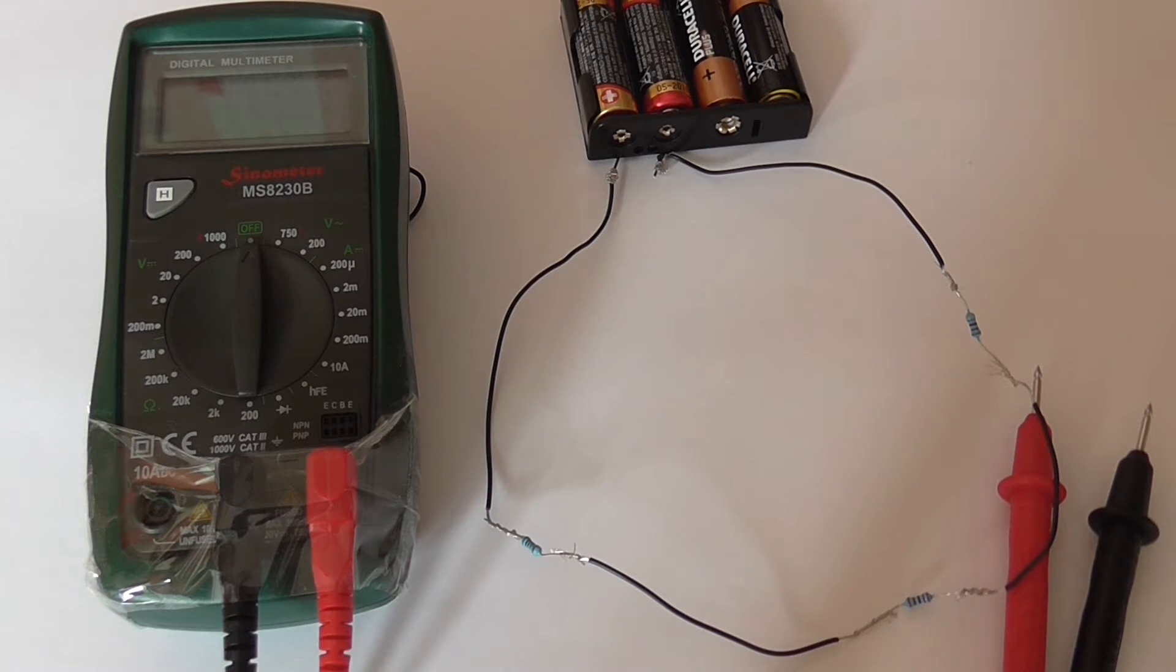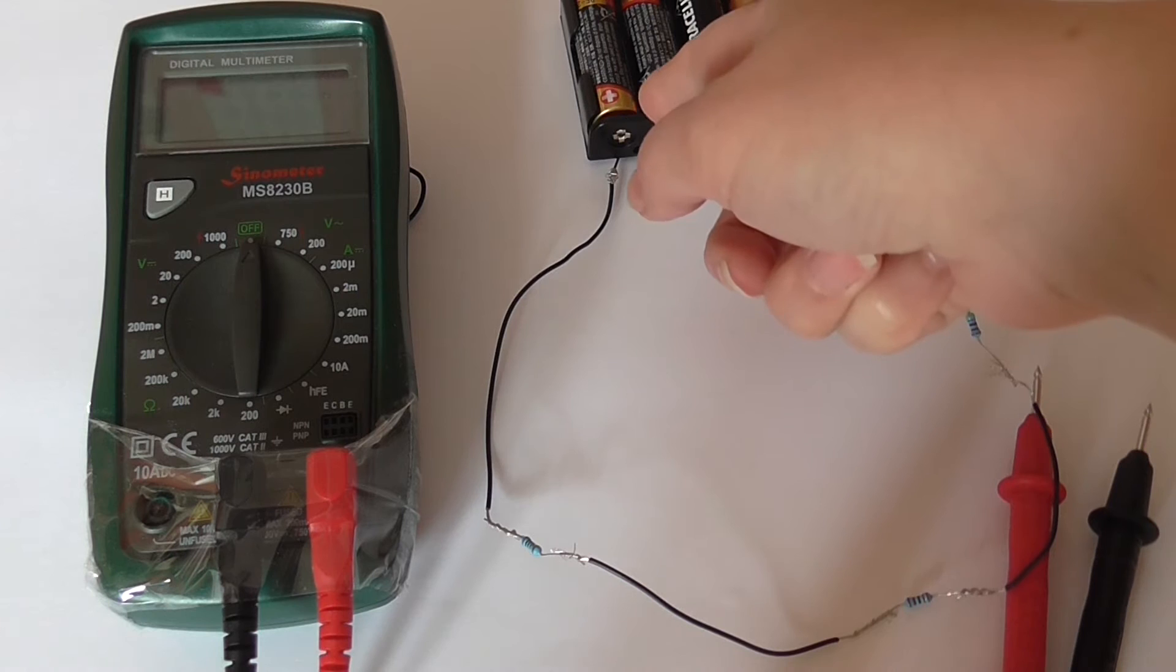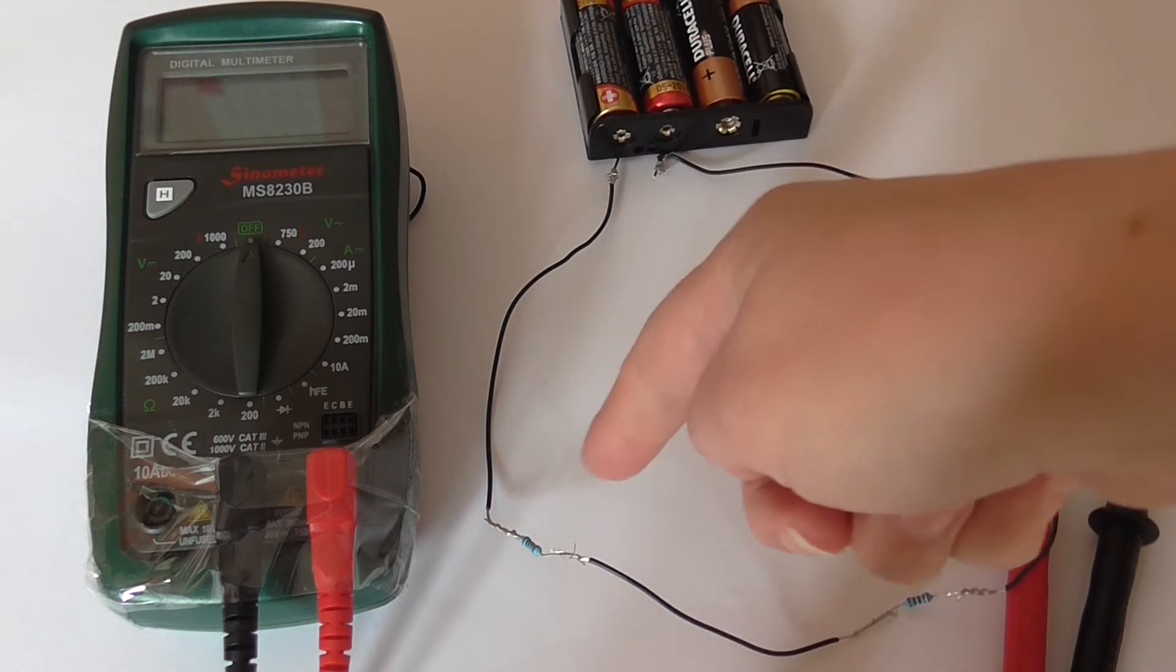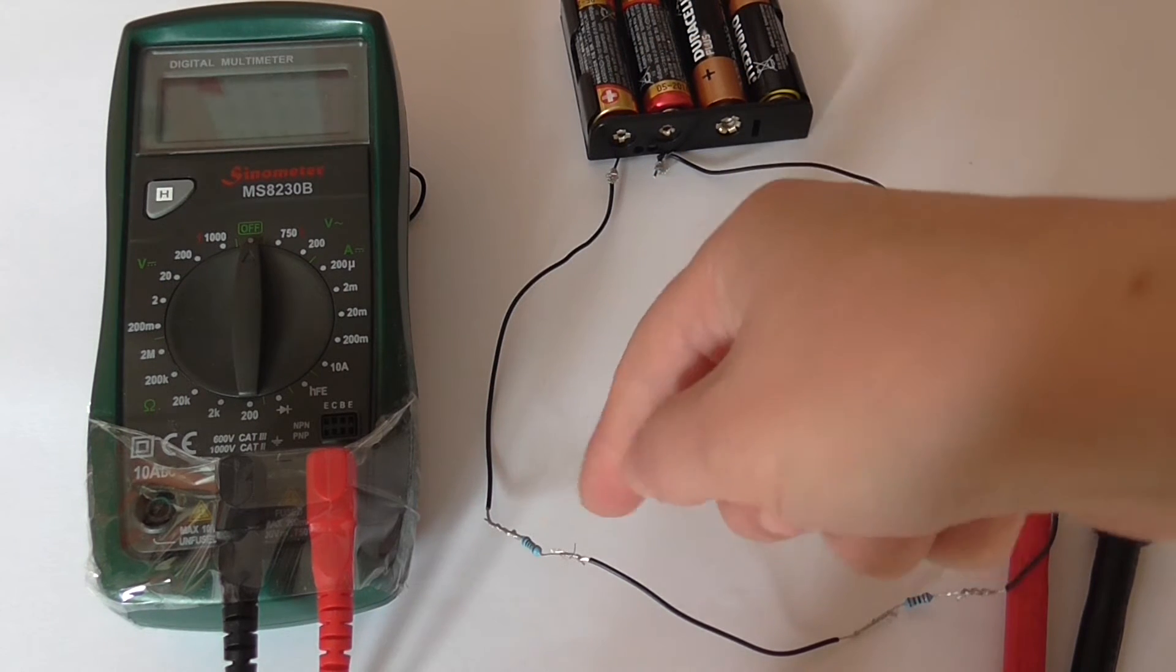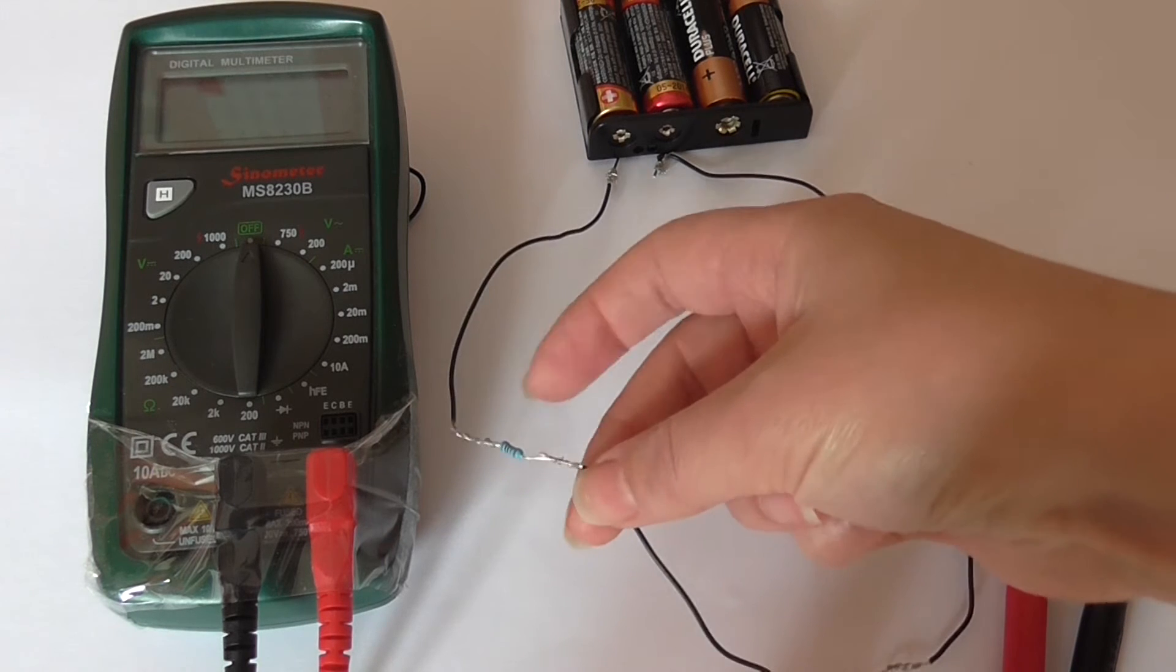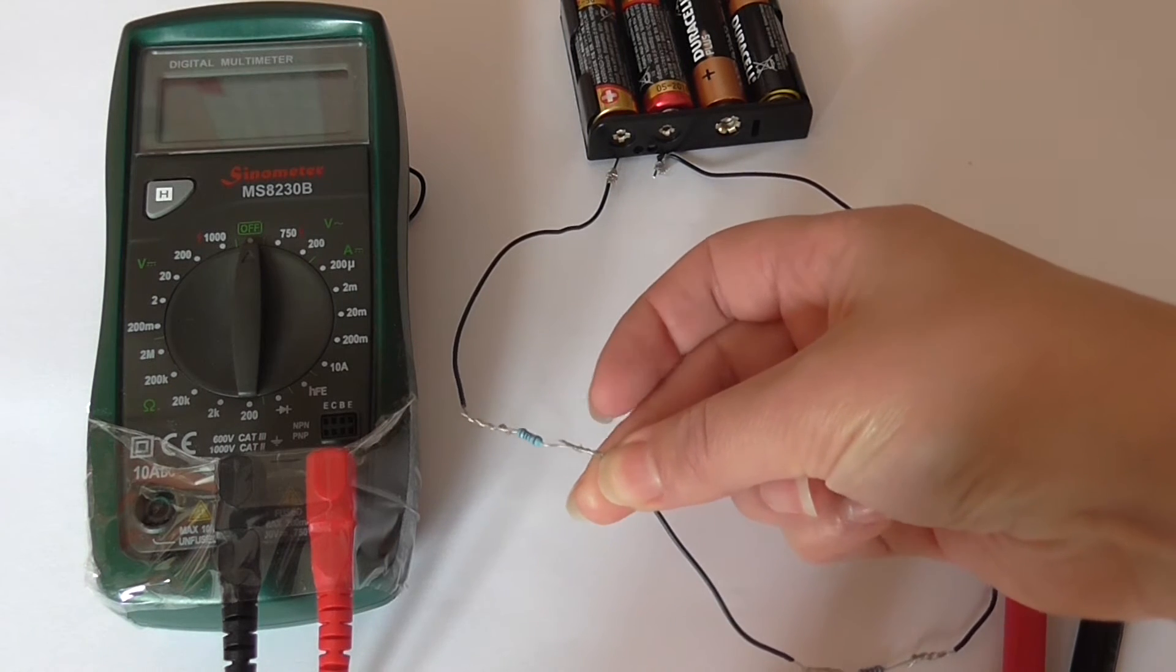This circuit is nice and simple. We have four cells. Here is the positive terminal, the 1kohm resistor. We know that this is a 1kohm resistor because the bands are brown, black, black, brown.